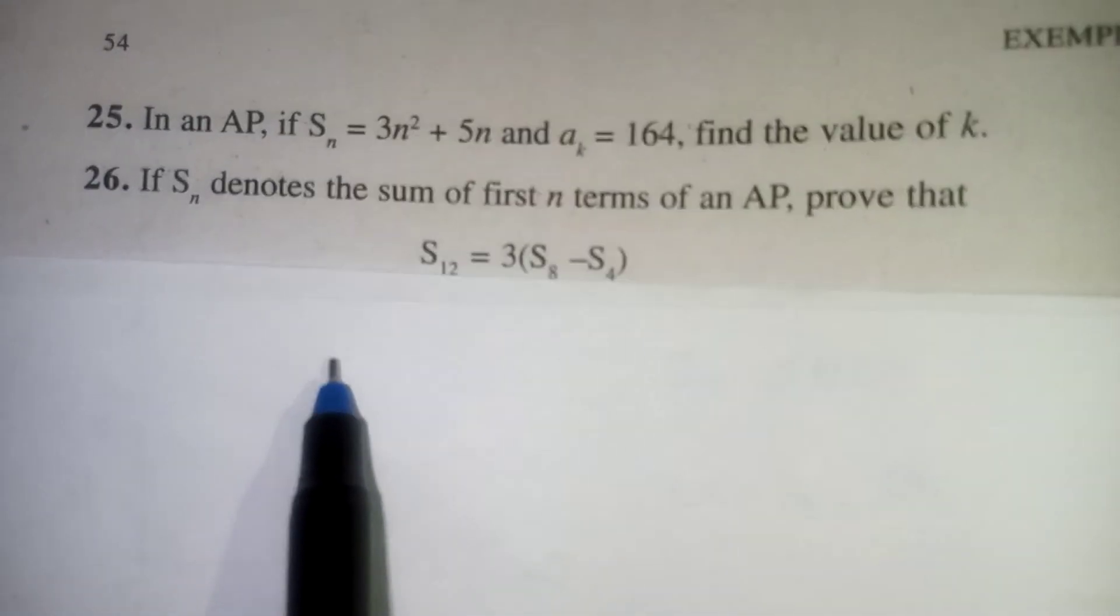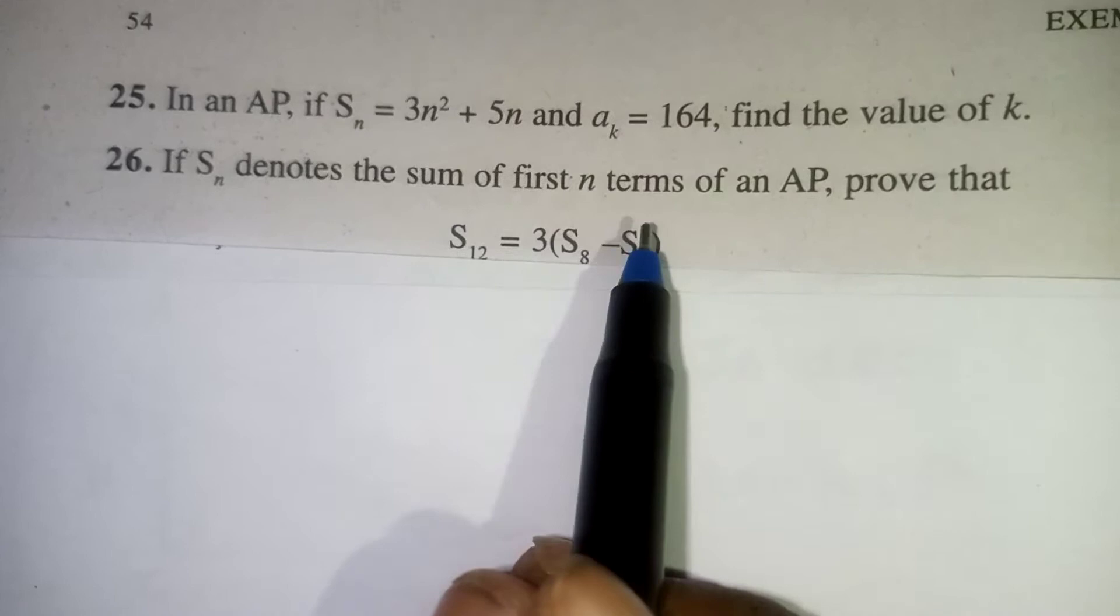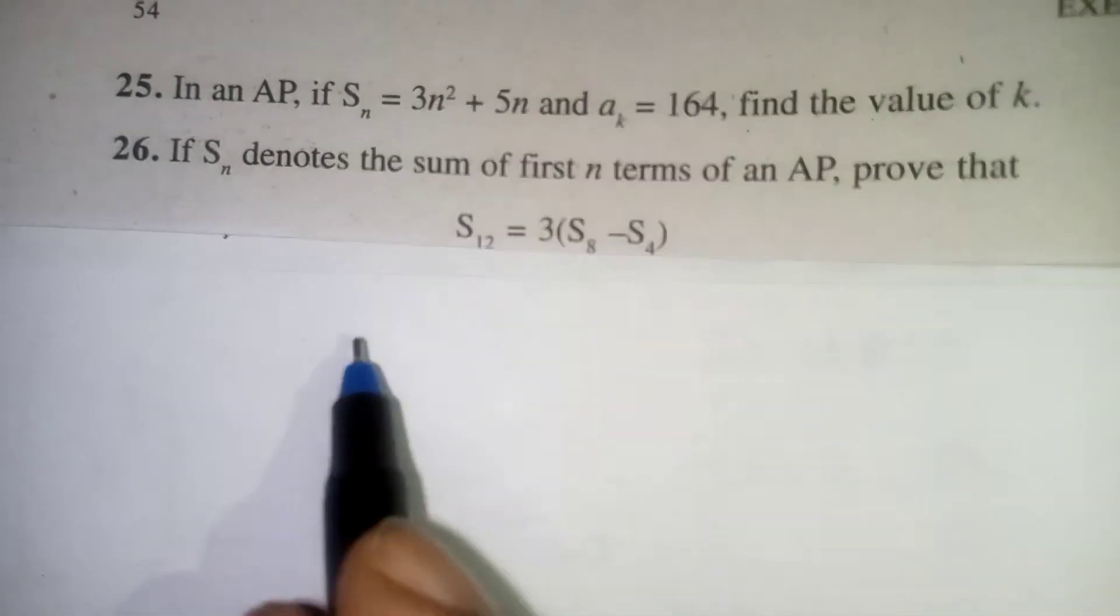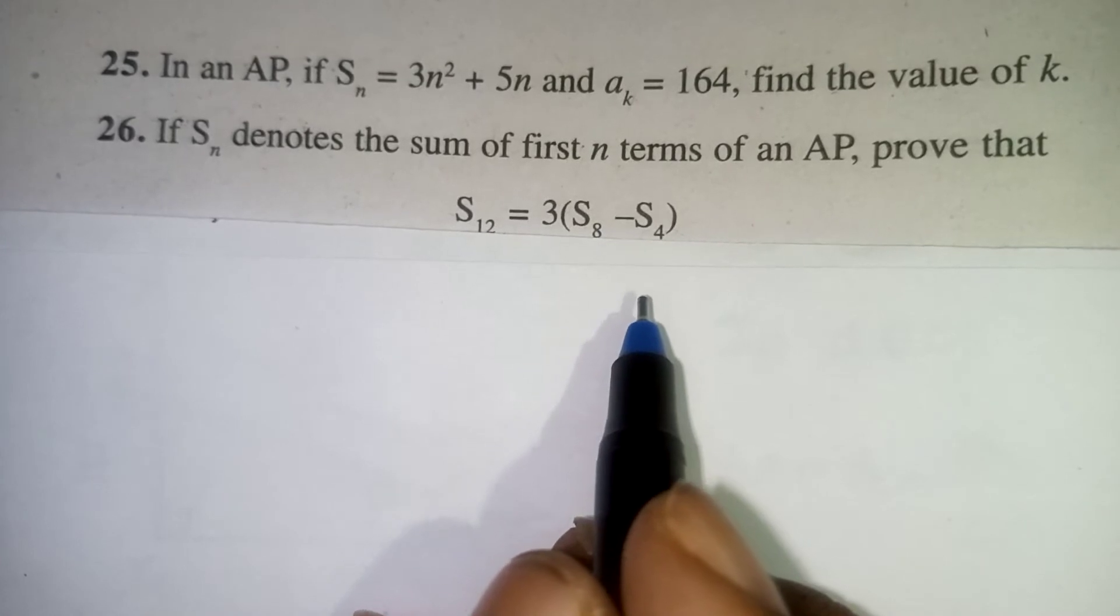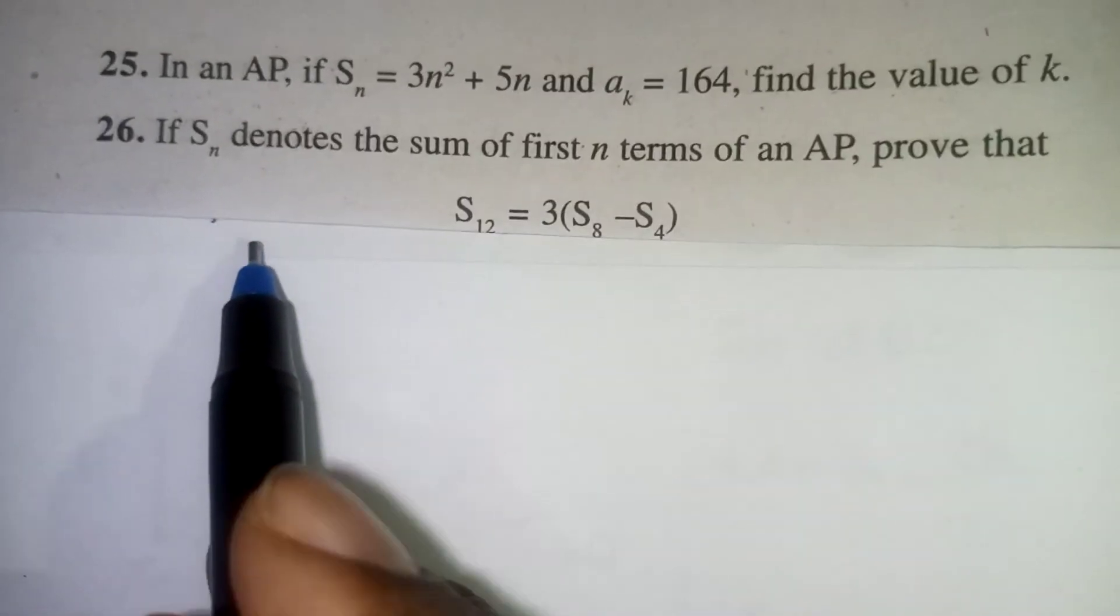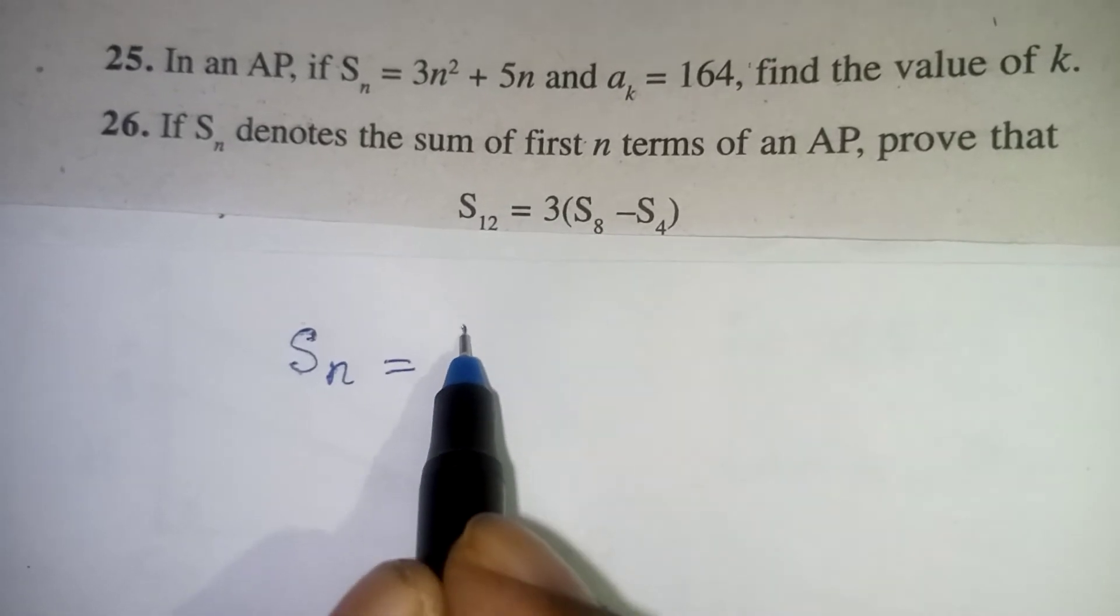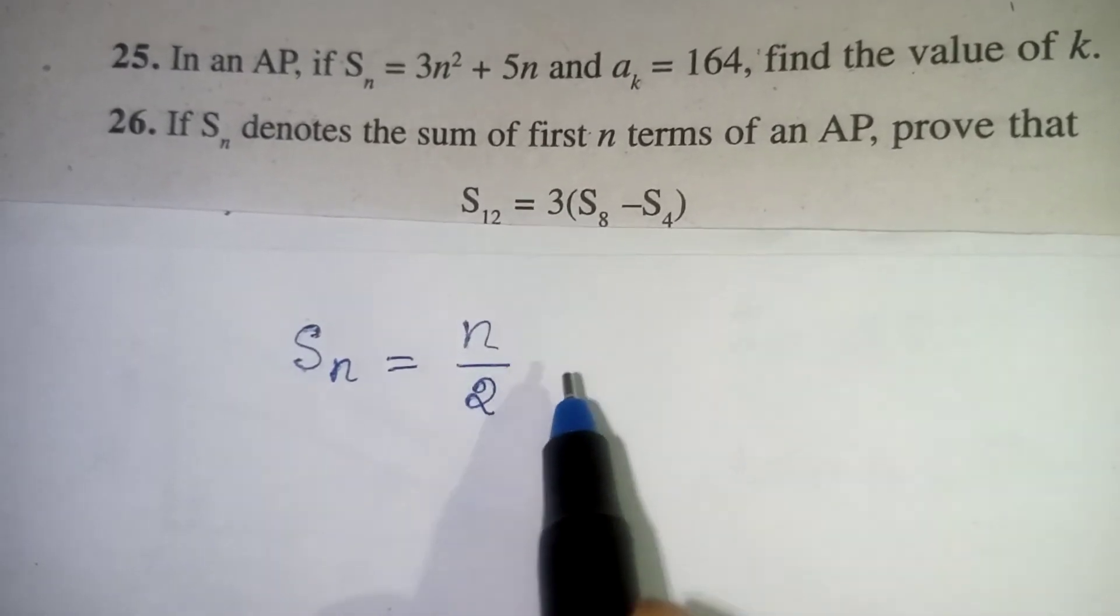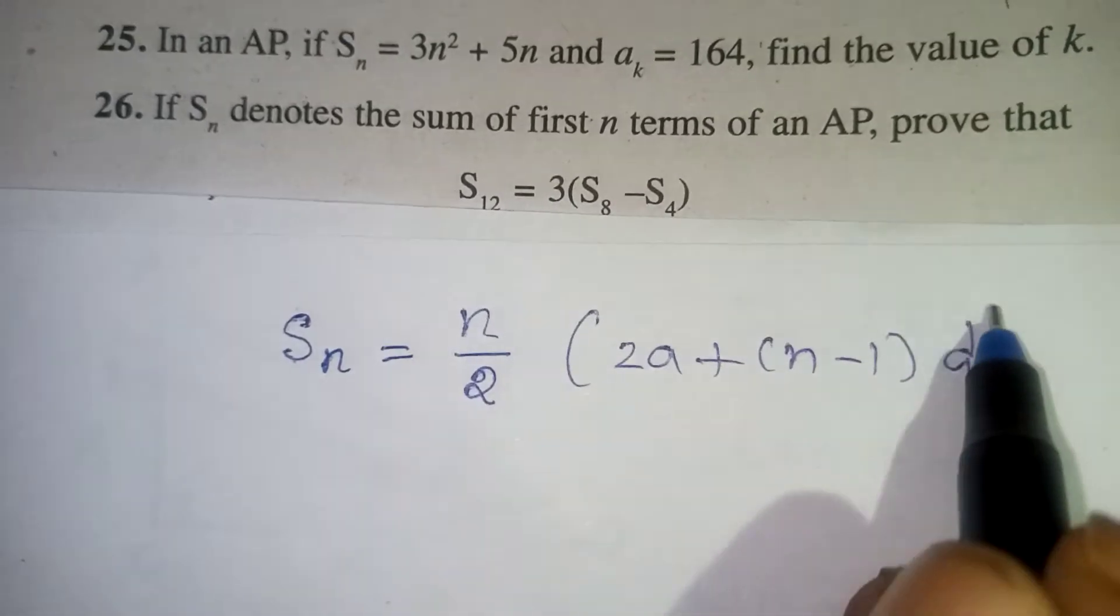Now look at the next question. If SN denotes the sum of first n terms of an AP, prove that S12 is equal to 3 times S8 minus S4 is our question. So SN denotes sum of first n terms is mentioned. So SN is equal to our basic formula, N by 2 into 2A plus n minus 1 into D. This is our basic formula.